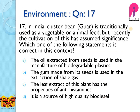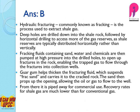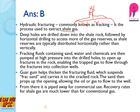Question 17: In India, cluster bean (guar) is traditionally used as a vegetable or animal feed, but recently its cultivation has assumed significance — why? Because the gum made from its seeds is used in the extraction of shale gas. To understand this, we must know the concept of hydraulic fracturing, or fracking — the process to extract shale gas. Deep holes are drilled down in the shale rock, and then horizontal drilling is also done because shale gas is found horizontally, not vertically. Then fracking fluids containing sand, water, and chemicals are pumped into these holes to open up fractures in the rock and release the gases.